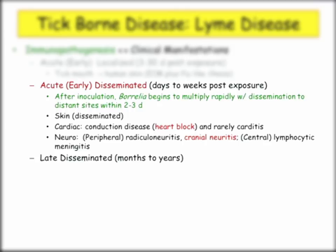When it goes to the heart, they're not going to say the patient has conduction disease — they're going to describe a patient who has heart block in the summer. Carditis, though rare. Peripheral radiculitis, cranial neuritis, Bell's palsy — they love Bell's palsy. It can cause meningitis too.